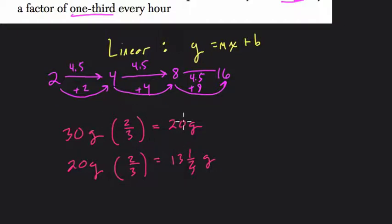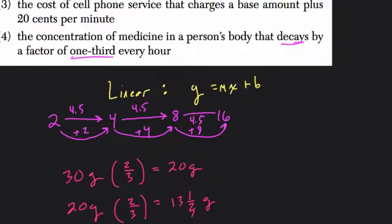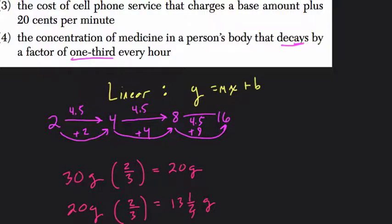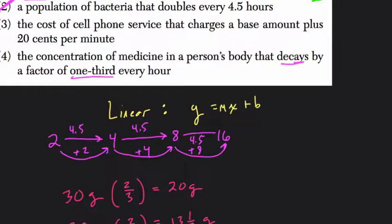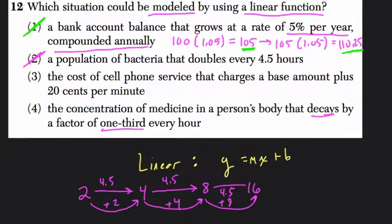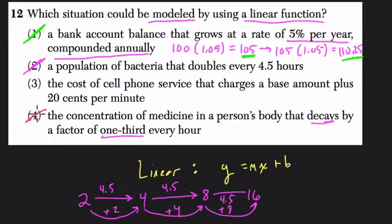So first our decrease is by 10, then by six and two-thirds. And already you can see the rate of change is not constant. It's exponential, but it's decreasing. It's repeated multiplication of thirds, in this case, or repeated division involving thirds as well. So that is out as well.